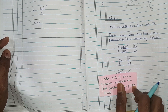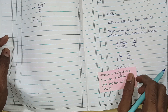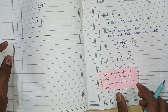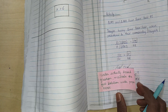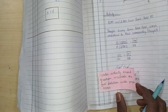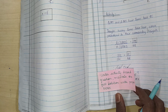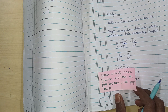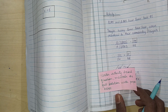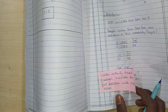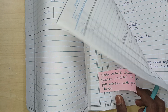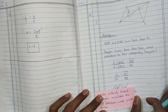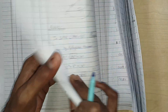For activity-based questions, maintain the full solution with proper boxes. After the end of the activity-based question, write up the solution, put a line, and fill in the boxes properly.